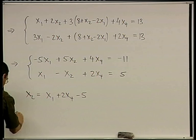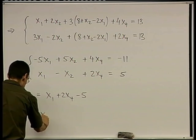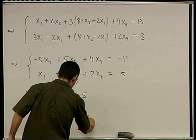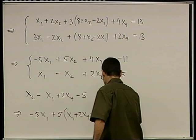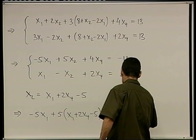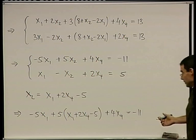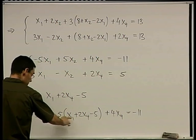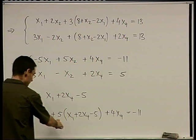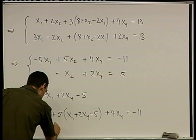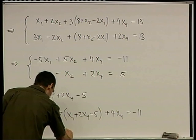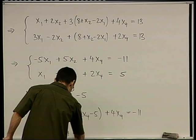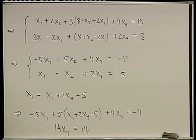I'm going to plug this into the first one, so I get minus 5x1 plus 5 times x2, which is x1 plus 2x4 minus 5, plus 4x4 equals minus 11. Again, I'm going to collect like terms. I have minus 5x1 plus 5x1, so this happens to die out here. Then I have 10x4 here plus 4x4 there, so 14x4, and then I have minus 25 here. Move it there, equals 14.